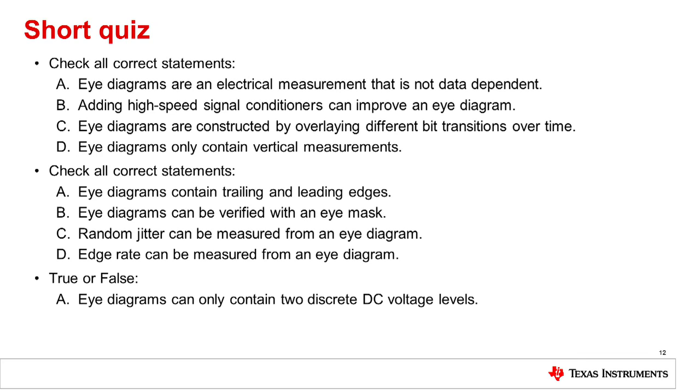True or false? Eye diagrams can only contain two discrete DC voltage levels. The correct answer is false.